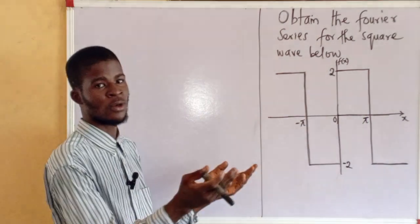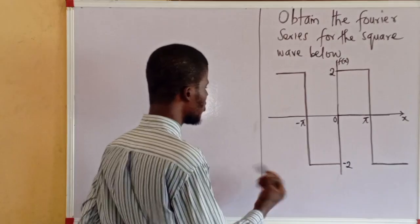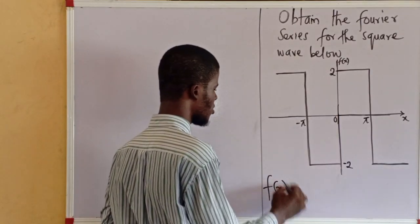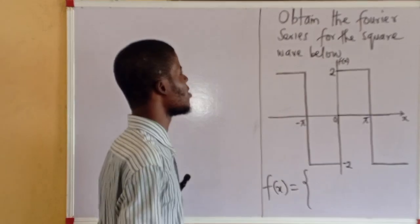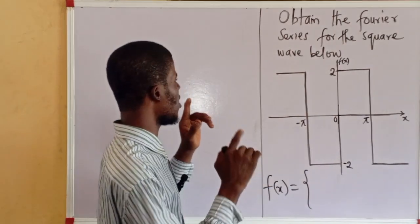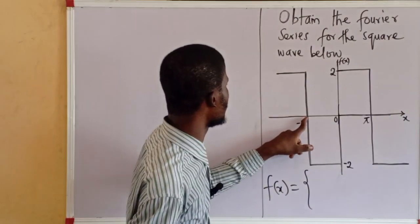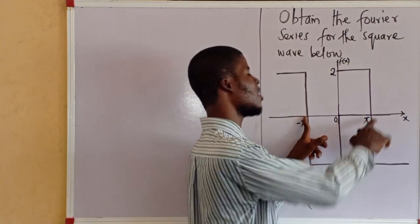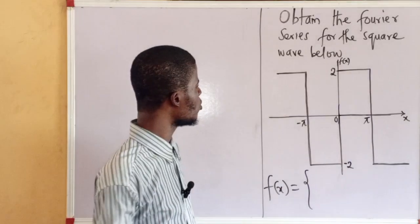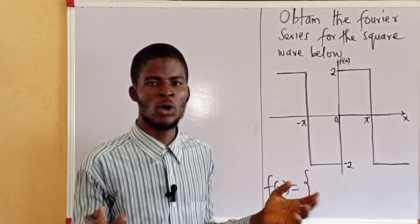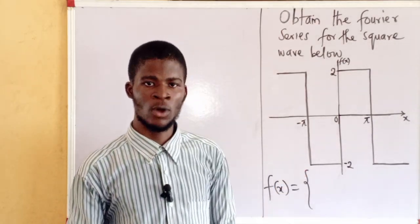Since this is the graph of the function, what is the function defined by? We can see that the interval over here is from minus pi to pi. And also, the function is odd — yes, the function is odd.